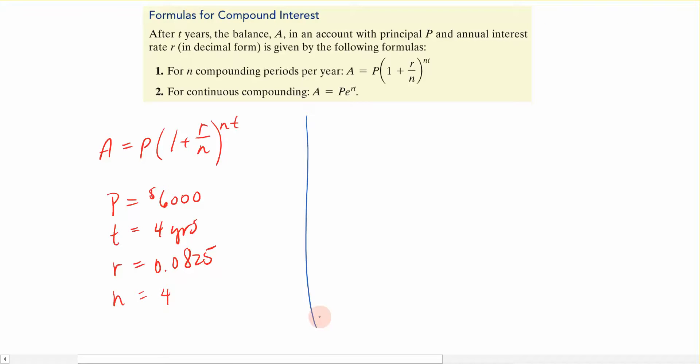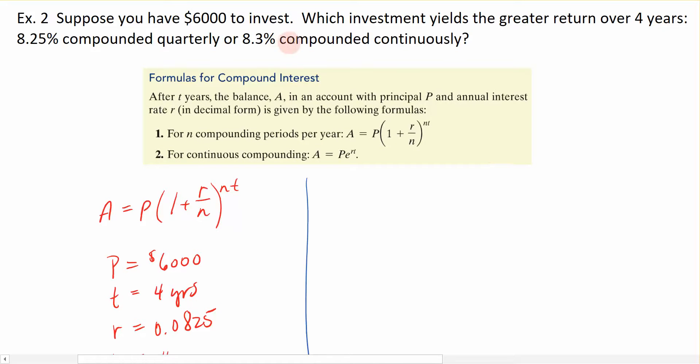The second way we're going to do this, it says, what happens if I do all of that and I compound it continuously? When I compound continuously, that word compound continuously identifies the fact that I'm going to use the formula, the PERT formula, P times E to the RT.